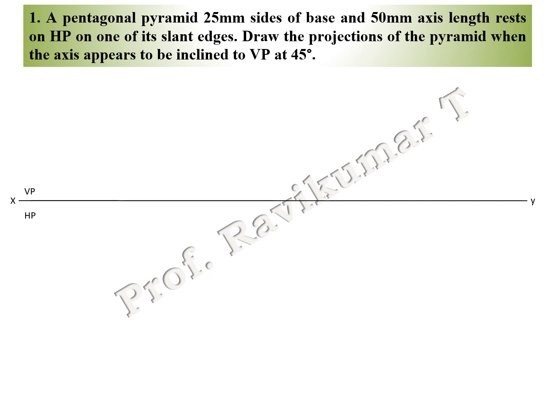This problem: pentagonal pyramid, 25mm sides of base, 50mm axis length, rests on HP on one of its slant edges. Slant edge means it is a corner condition. Draw the projection of the pyramid when the axis appears to be parallel to VP. The word 'appear' means it is a without-locus problem — you need not find out the beta angle.